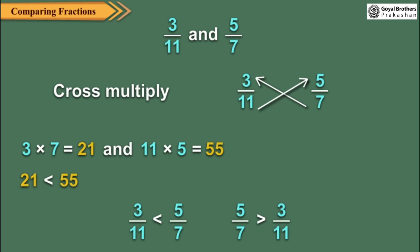In this method, we cross multiply the numerator of the first fraction by the denominator of the second fraction and then the numerator of the second fraction by the denominator of the first fraction. The side with the greater product is the greater fraction.